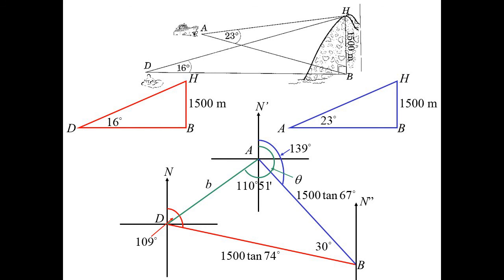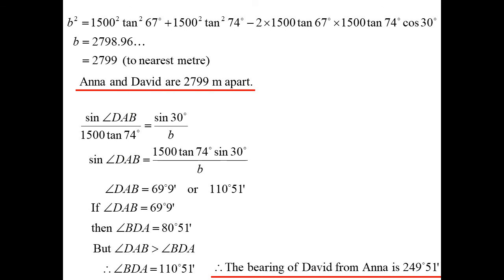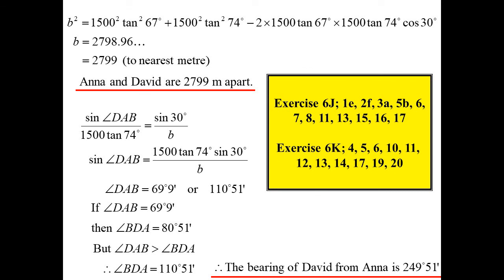So our bearing, add them together, we end up with 249, 51. I would imagine in the HSC that particular year, a lot of people would have got 69 degrees 9 on their calculator, and they would have just blindly accepted that answer. Oh, my calculator tells me it's this. So that's the angle that I'm going to use. Didn't even consider that, hang on, it might be an obtuse angle. All right, here we go.